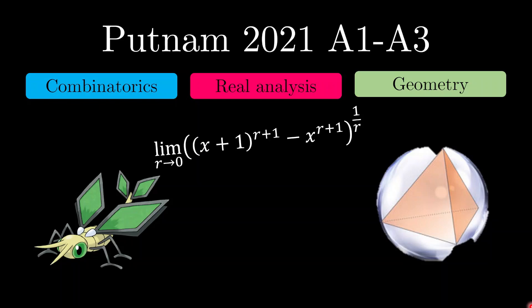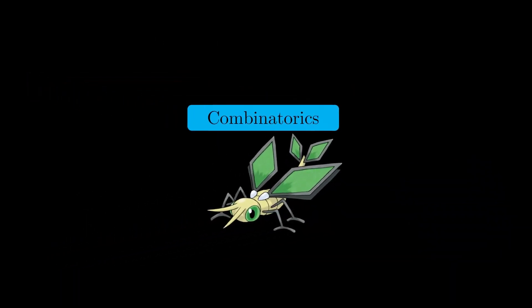Hello everyone. The Putnam 2021 was conducted this past weekend. The Putnam is an undergraduate mathematics competition consisting of 6 problems in the morning and 6 problems in the afternoon. In this video, we will be covering the solutions to problems A1 to A3, all of which have pretty short and elegant solutions. Without further ado, let us take a look at problem 1.